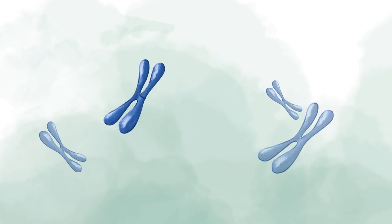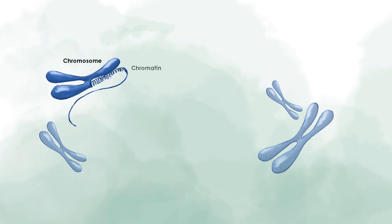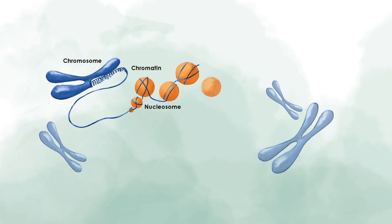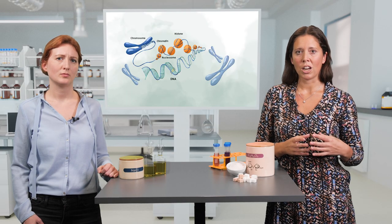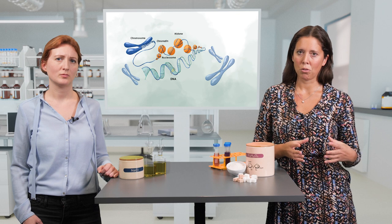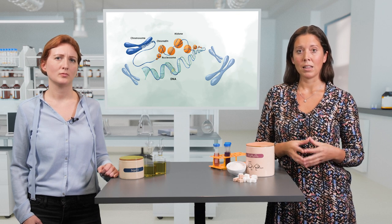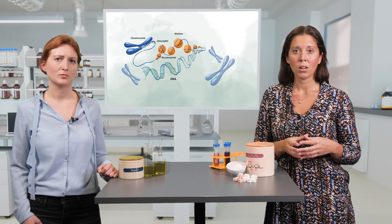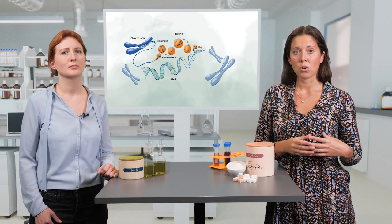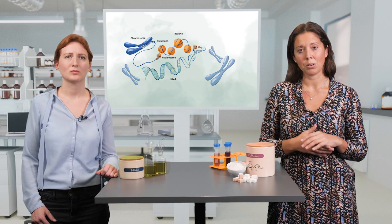Epigenetics modulates and regulates gene expression through various epigenomic marks. Chemical compounds are either added or removed from DNA or histone proteins by specific enzymes. These marks change the spatial conformation of your DNA, either making it easier to access a gene or making it more difficult. This way, gene expression can adapt to certain circumstances.